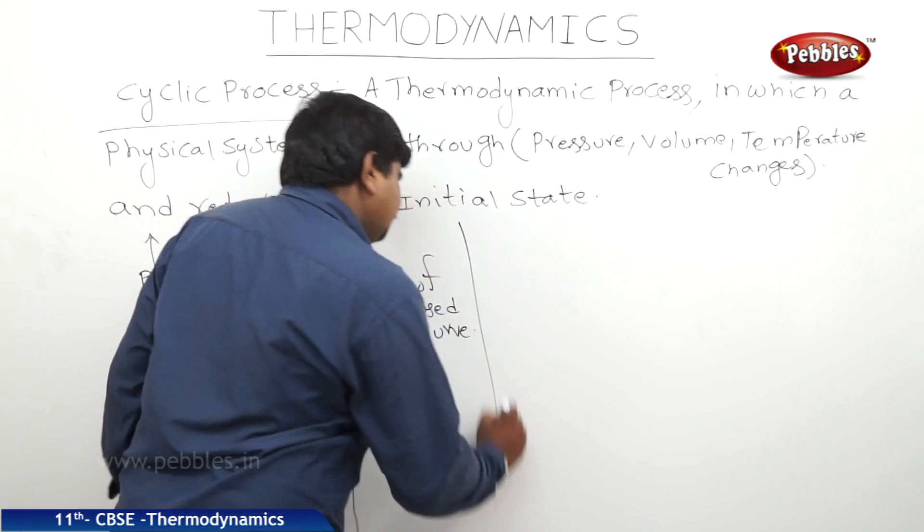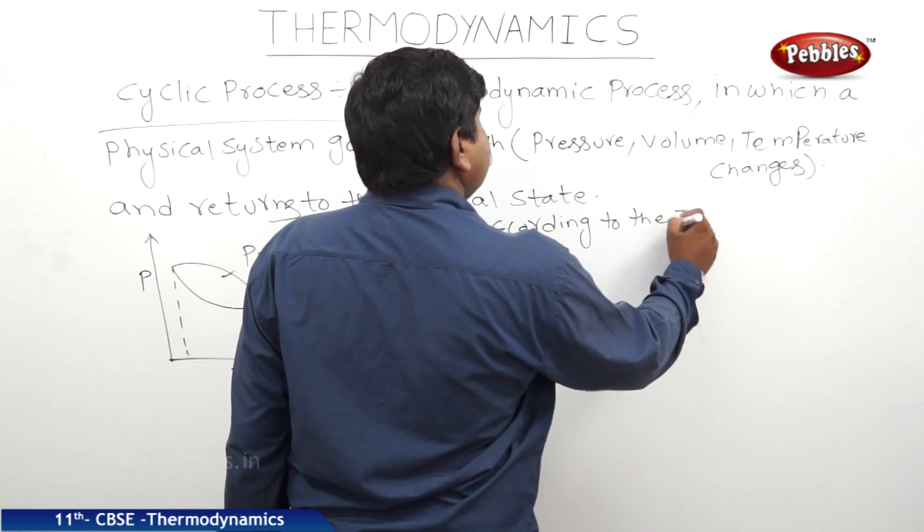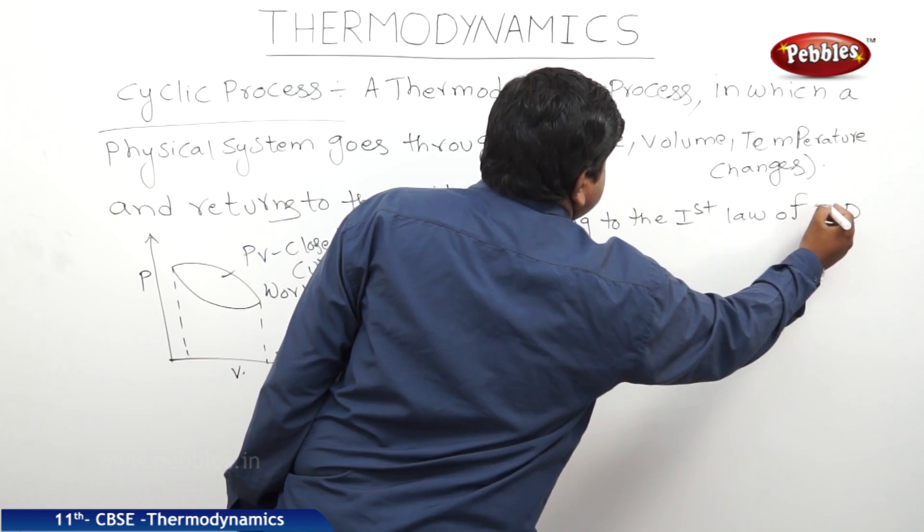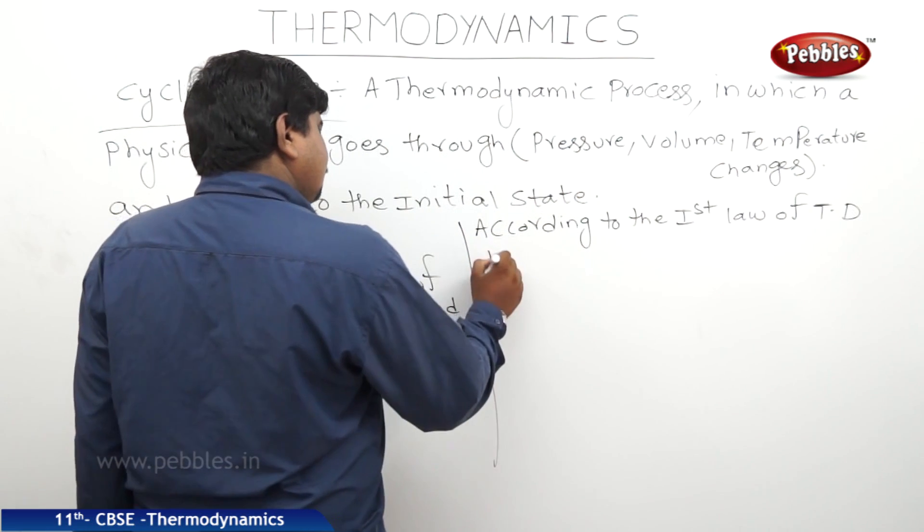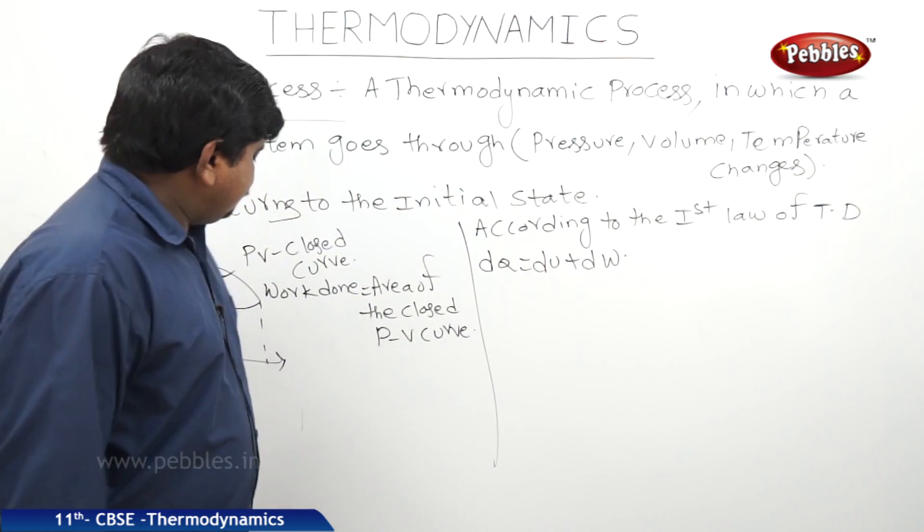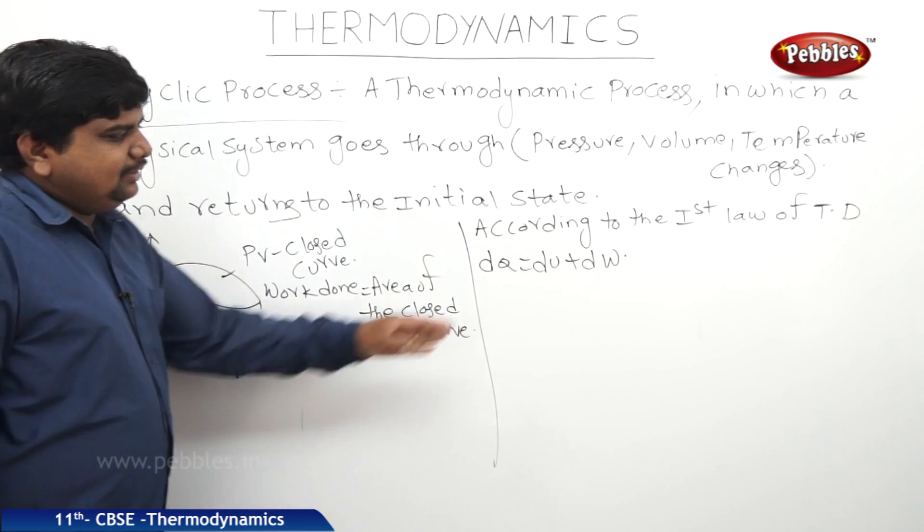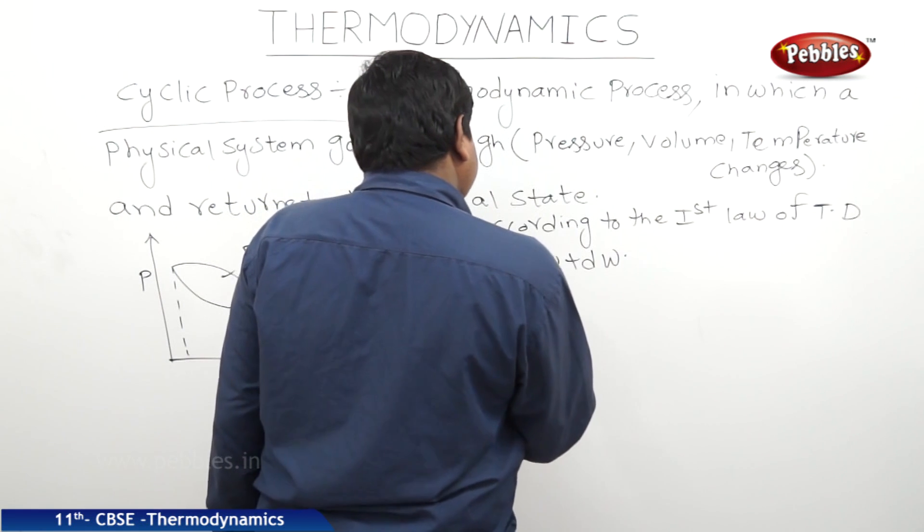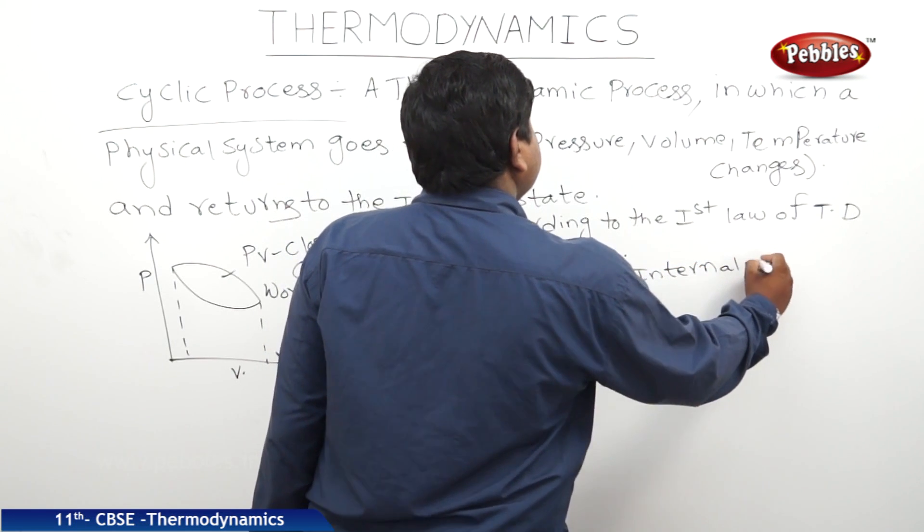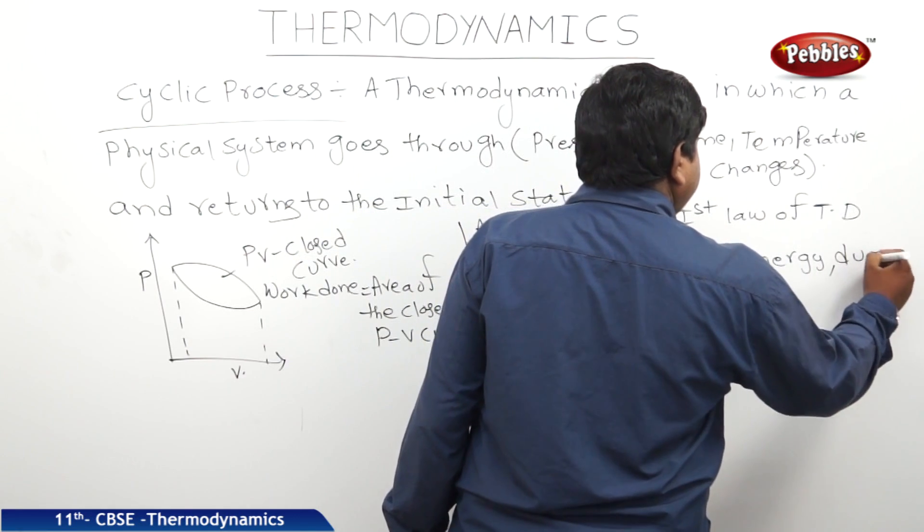According to the first law of thermodynamics, our first law of TD, where TD is thermodynamics, we can write DQ is equal to DU plus DW. As the body is again coming to the original state or initial state, there will be no change in the internal energy.